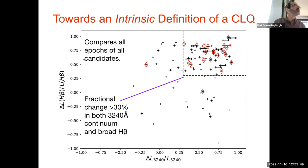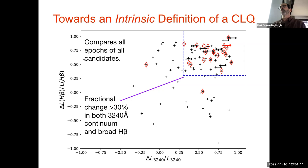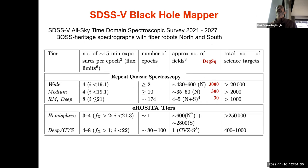We wanted to get away from just the 3-sigma criterion, which depends on spectral quality, and look for an intrinsic definition of changing-look quasars for future statistical studies. This seems to work well: a fractional change of at least 30 percent in both the continuum emission and the broad H-beta.